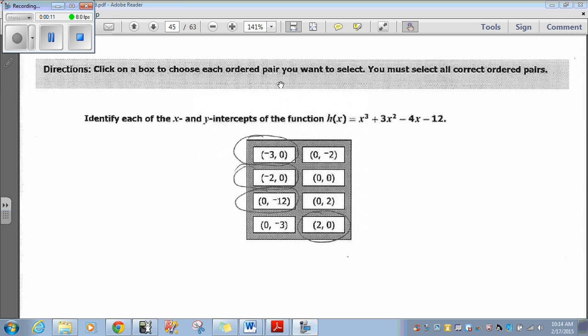Click on the box to choose each ordered pair you want to select. You must select all correct pairs. That's the thing about the SOL. If you don't select all the correct answers, you get the question wrong. Identify each X and Y intercepts of the function H of X equals X cubed plus 3X squared minus 4X minus 12.